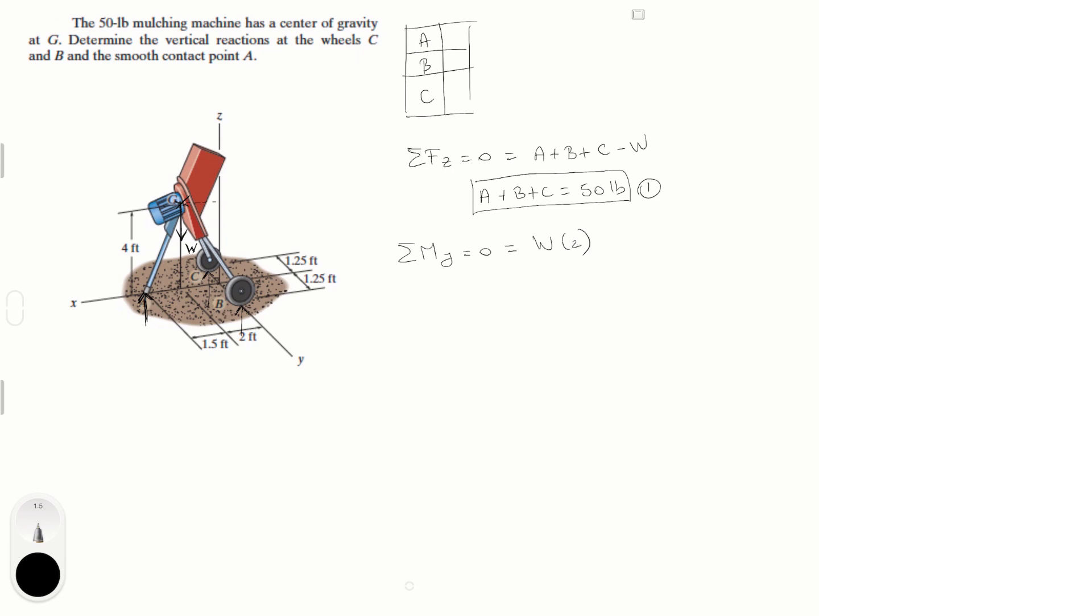Then the second is A which is right here times the distance between A and the CY plane which is 3.5. So it's A times 3.5.